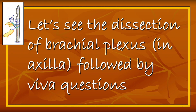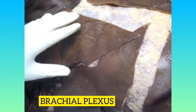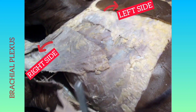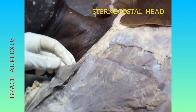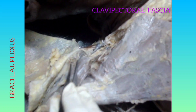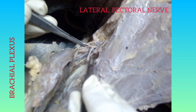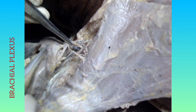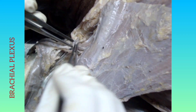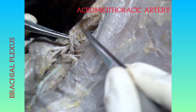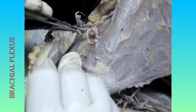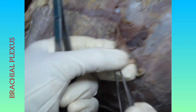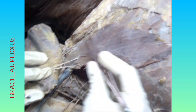Let's see the dissection of the brachial plexus in the axilla — the cords and their branches — followed by viva questions. The skin of the pectoral region is removed along with the superficial fascia and deep fascia, exposing pectoralis major. The clavicular head and the sternocostal head are visible. When the clavicular head is reflected we get the clavipectoral fascia, which is pierced by the cephalic vein and the lateral pectoral nerve, which supplies both heads. The acromiothoracic artery is also visible, dividing into clavicular, pectoral, deltoid, and acromial branches.